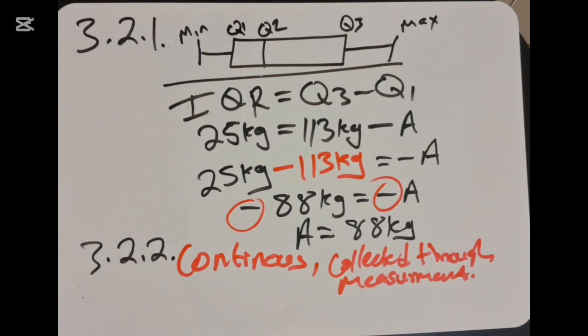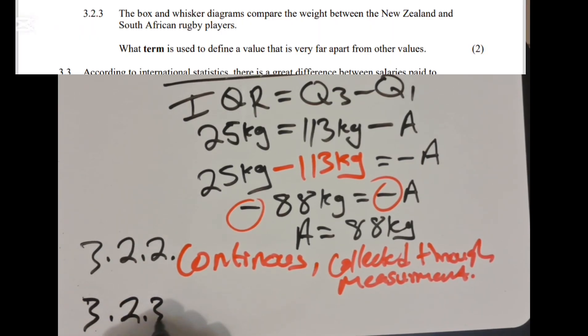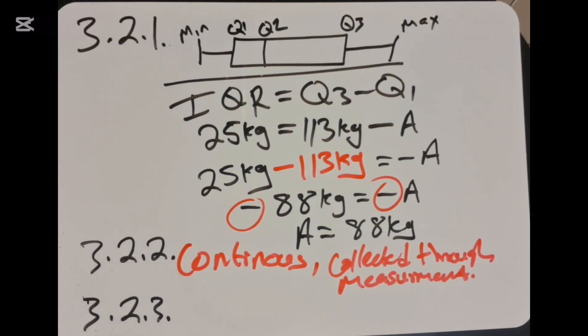Moving to the next question, which is 3.2.3, it says the box and whisker diagram compares the weight between the New Zealand and South Africa rugby players. What term is used to define the value that is very far apart from other values? We call this one the outlier.